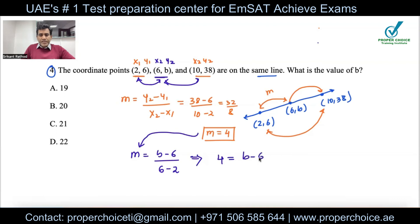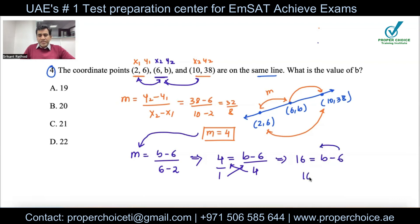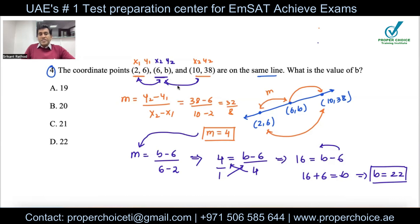Using points (2, 6) and (6, b): slope = (b − 6) / (6 − 2) = (b − 6) / 4. Setting this equal to 4: 4 = (b − 6) / 4. Cross-multiplying: 16 = b − 6, so b = 16 + 6 = 22. The value of b is 22, which is option B. That's how you find a missing coordinate when collinear points are given.